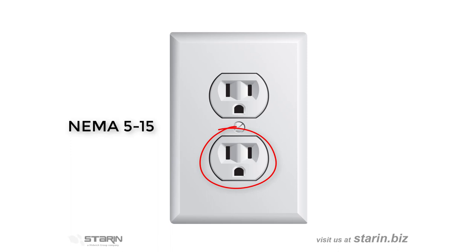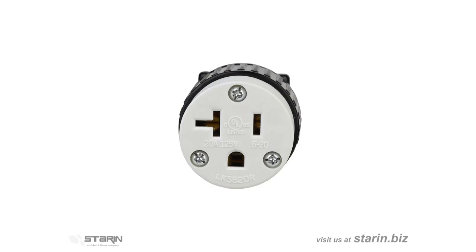Occasionally we use devices that draw 20 amps. Typically these devices have a plug with one vertical prong for live and one horizontal prong for neutral, along with the peg for earth ground. These are called NEMA 5-20. While there are a lot of wall receptacles that have a T-shaped neutral that can take both 15 and 20 amp plugs, you'll need to make sure that the EC installs a suitable receptacle for a 20 amp plug.